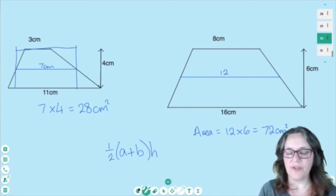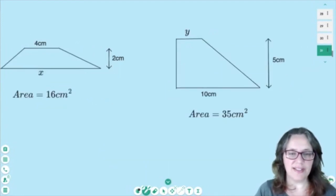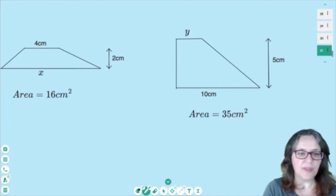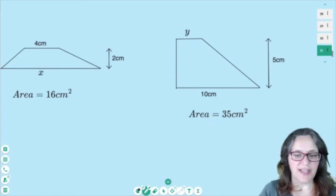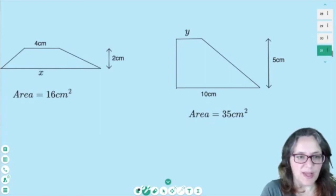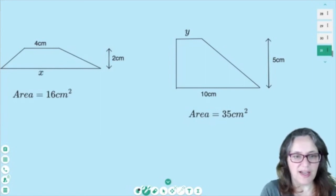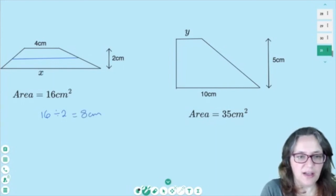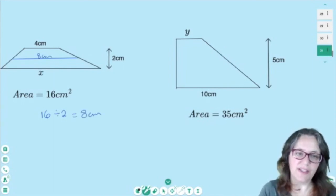So now that we've found some areas, let's use the same intuitive method to work backwards. So on the left, I've got an area of 16 cm squared. So that must mean that 2 times that length across the middle is 16. So if I just do 16 divided by 2, I will get 8 cm.